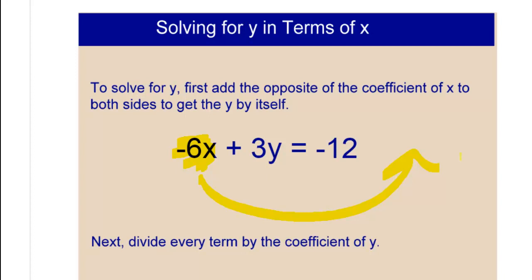We do that by using our opposite property, because we know anytime that we are adding any two things together, the way we get rid of one is by adding the opposite. So we're going to add 6x; we're going to add the entire term because we want that entire term to become zero.